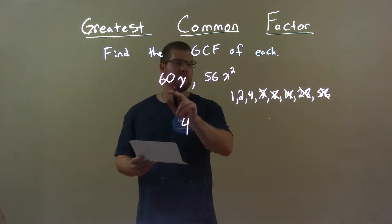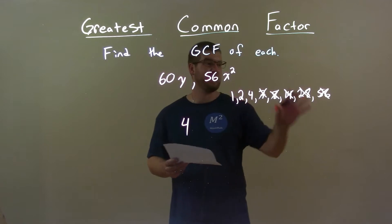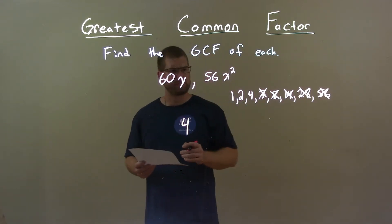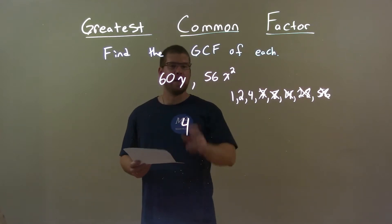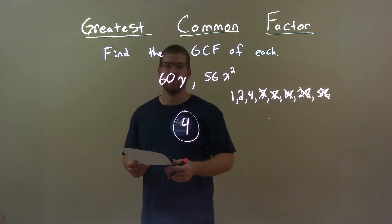So 4 goes into 60 and 56, and it's the largest one, the greatest common factor for both. Now, variables: we got a y and two x's. No commonalities here, so my final answer is just the number 4.